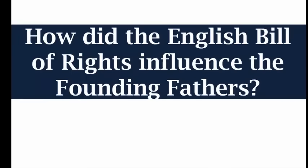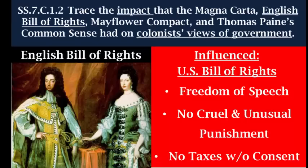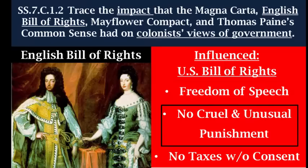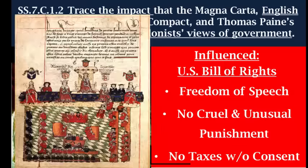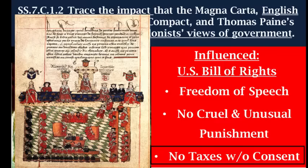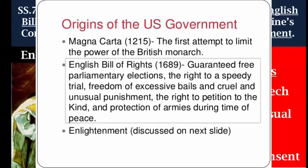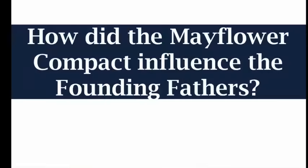What influence did the English Bill of Rights have on the founding fathers? As you can imagine from the name, it had a big influence on our Bill of Rights. It contains many of the same rights, such as freedom of speech (our First Amendment) and no cruel and unusual punishment (our Eighth Amendment). It also established the idea that the king or executive could not pass taxes without the consent of the legislative body — Parliament, or in our case, Congress. Look for answers about similar rights or the power of the executive.